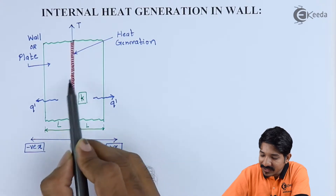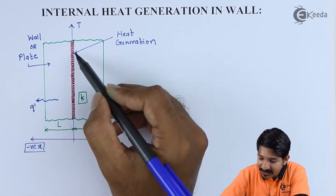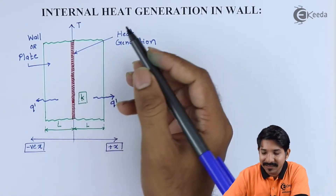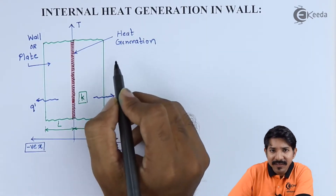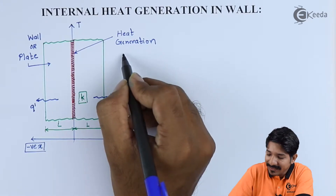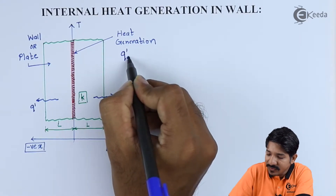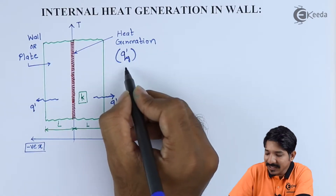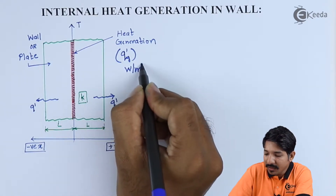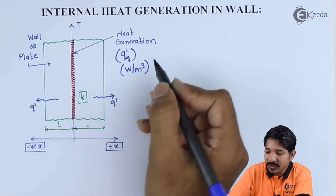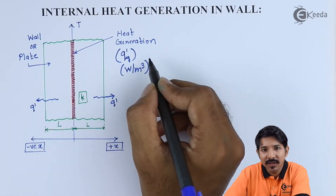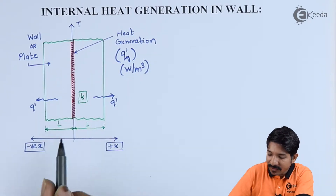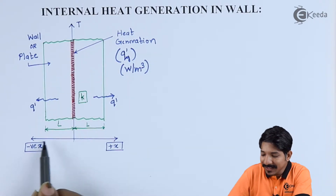We have considered a simple wall in which there is some medium by which heat is generated. There is some medium here where the heat generation is taking place. Let's say q_dot_g is the amount of heat that is generated and the unit is watt per meter cube — heat generation is always given in watt per meter cube, i.e., per unit volume.